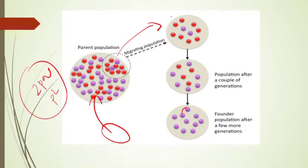Unlike gene flow which is a slow process, genetic drift is a sudden process.